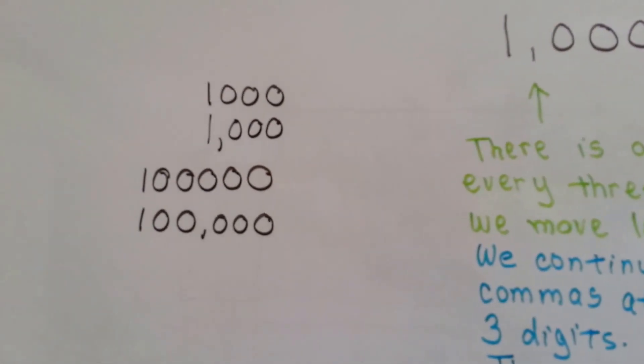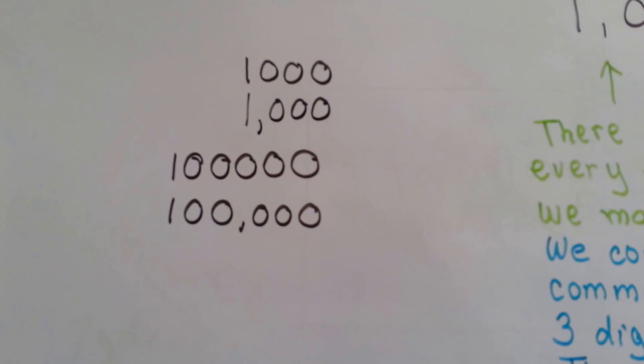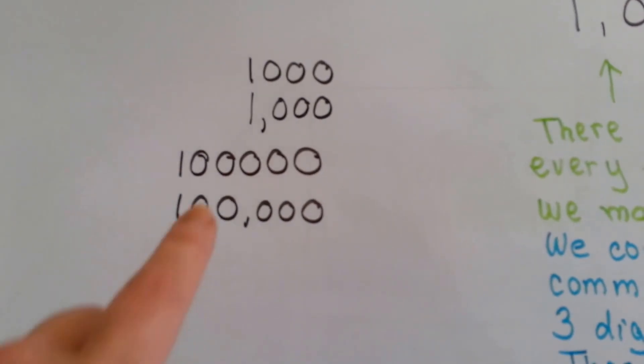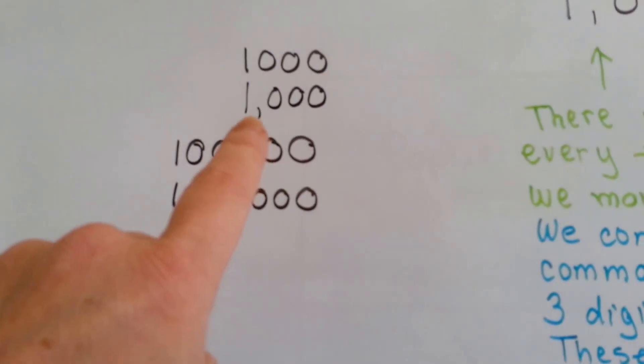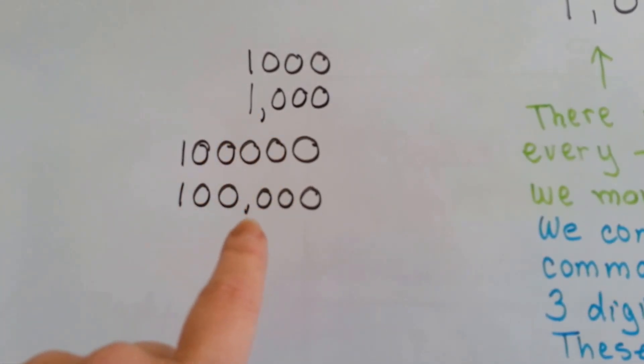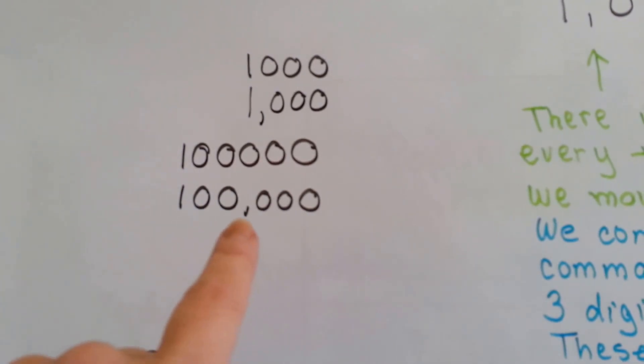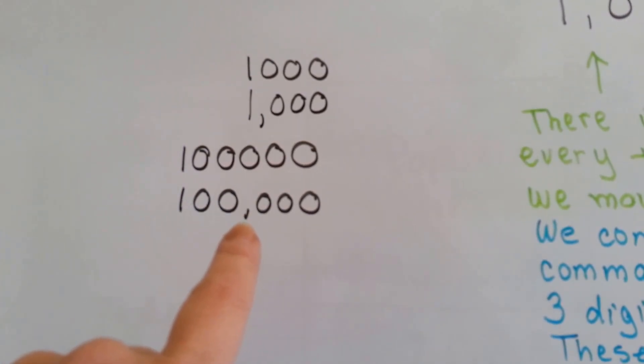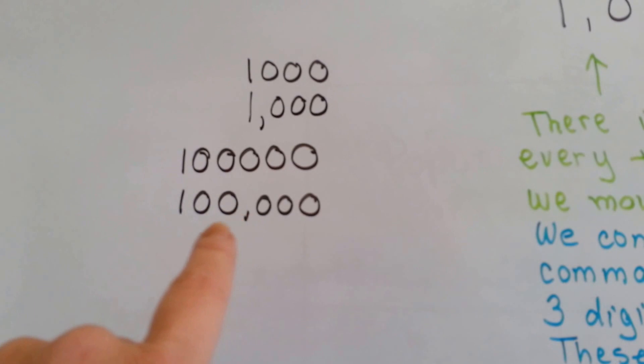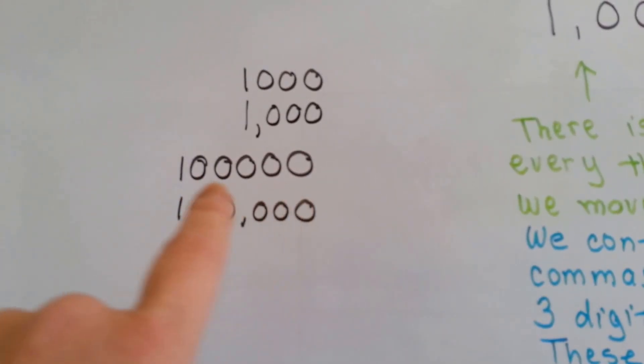Now in Europe, they don't always put commas like they do in England, in the UK, or like we do here in the United States. But it is easier for the eyes to see the place value when there's a comma there. It just depends on your preference. Personally, I grew up with commas, and I like commas. So this is 100,000. It's a little harder for me to read when the comma's not there.